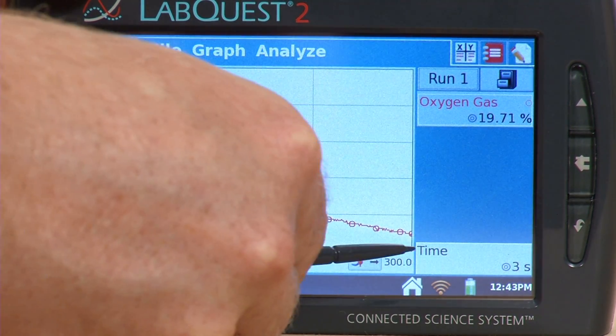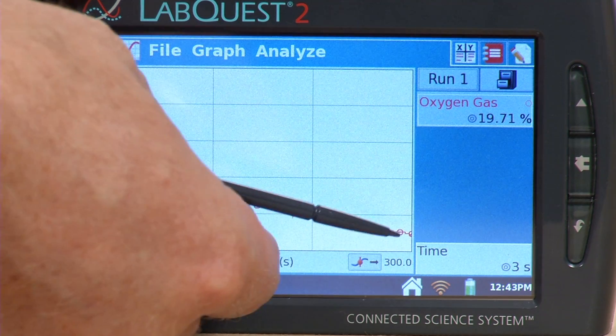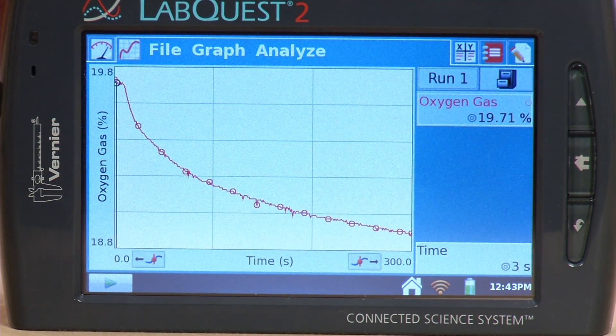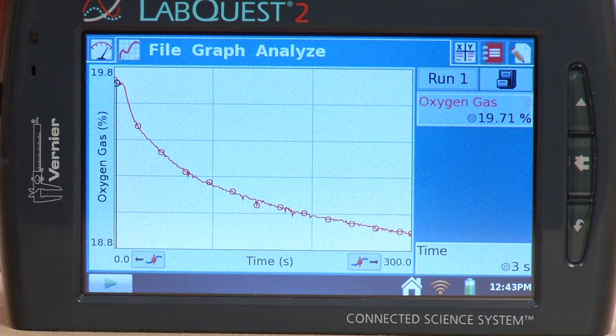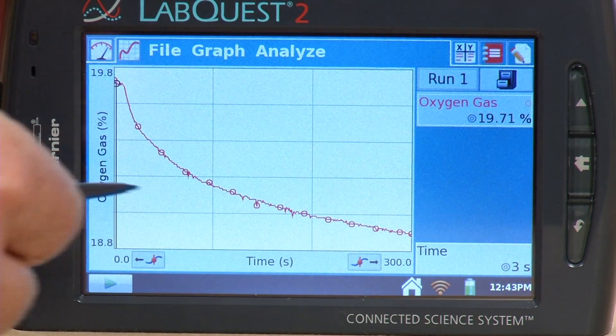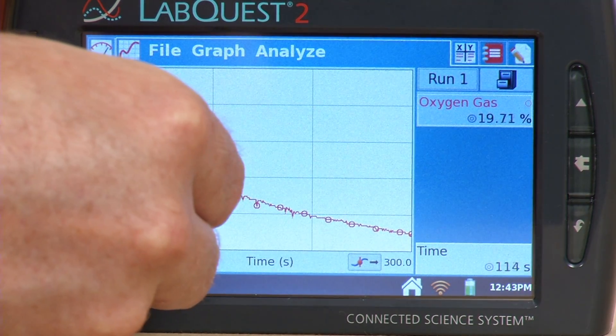But this last part there looks like it kind of levels off and becomes a fairly linear portion. And what I would like to do is analyze this section of the data. And so I'm going to highlight that.